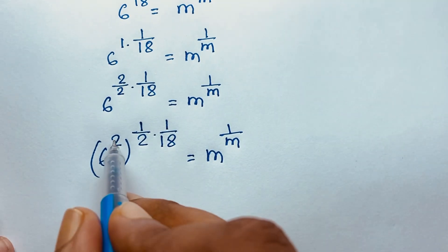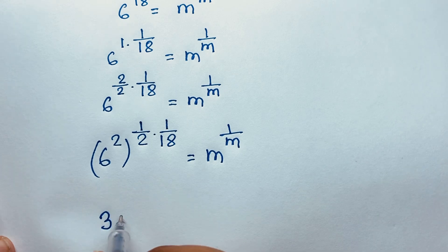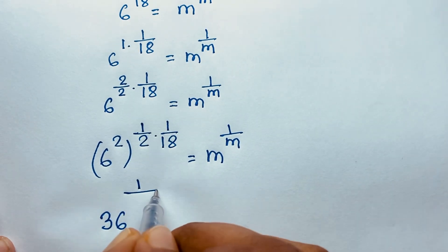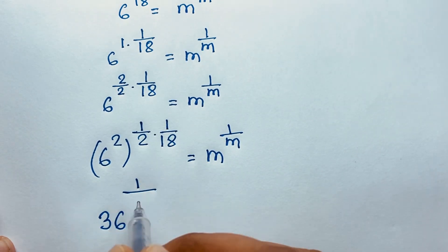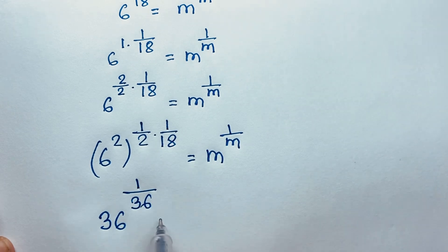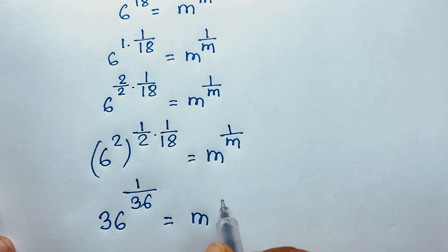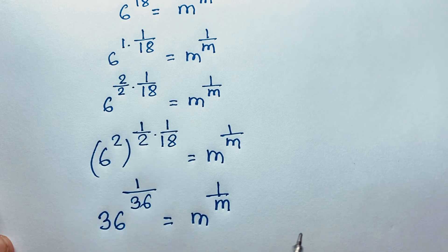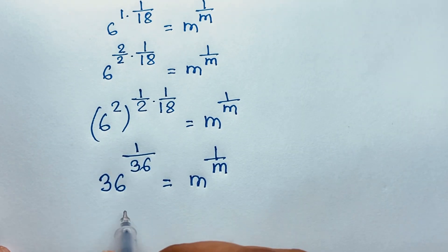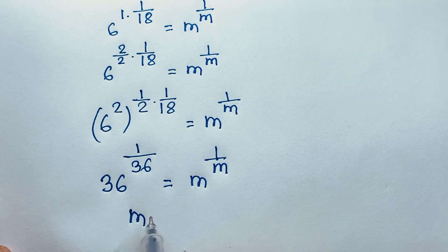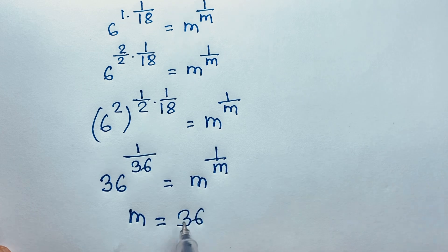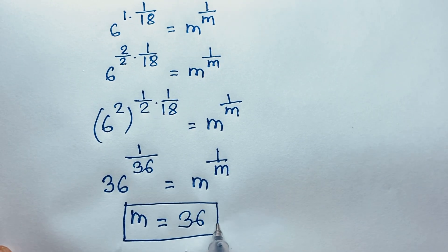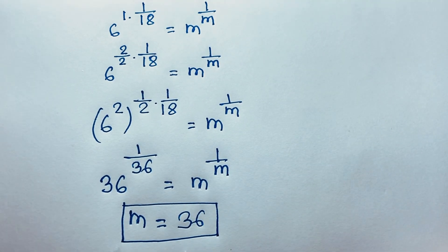Now, 6 to the power 2 equals 36. Then 1 times 1 over 2 times 18 equals 1 over 36. So it becomes 36 to the power 1 over 36 is equal to m to the power 1 over m. If I compare both sides, you can see that m is equal to 36. This is our final answer in this exponential math problem.